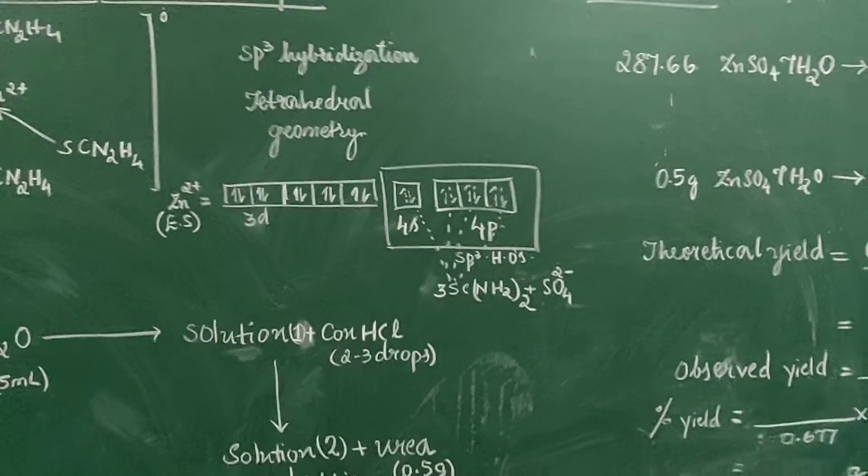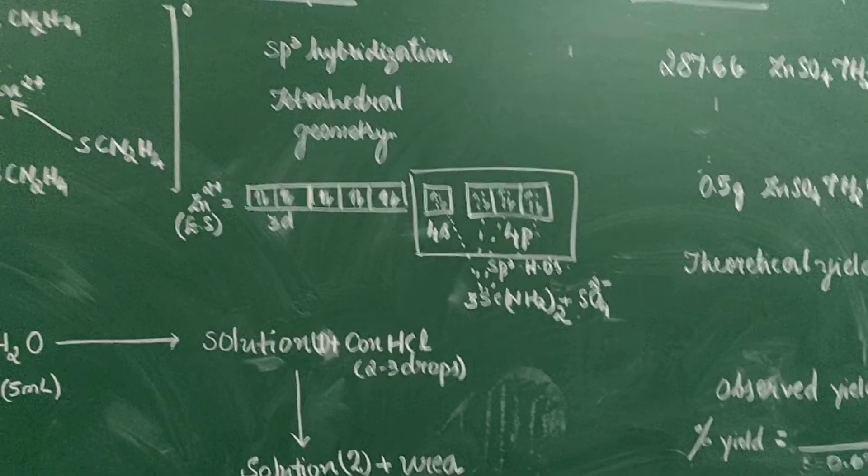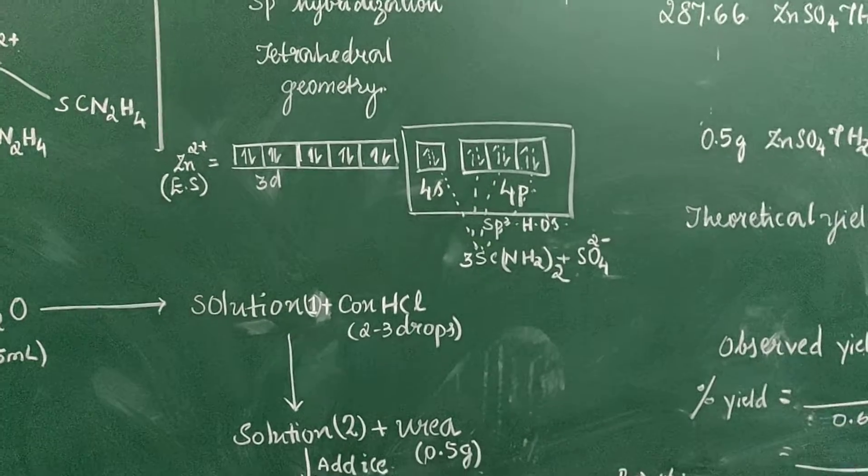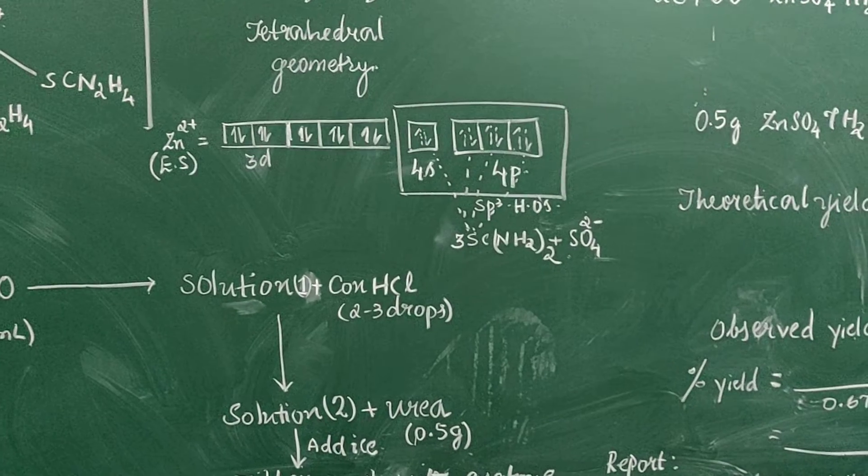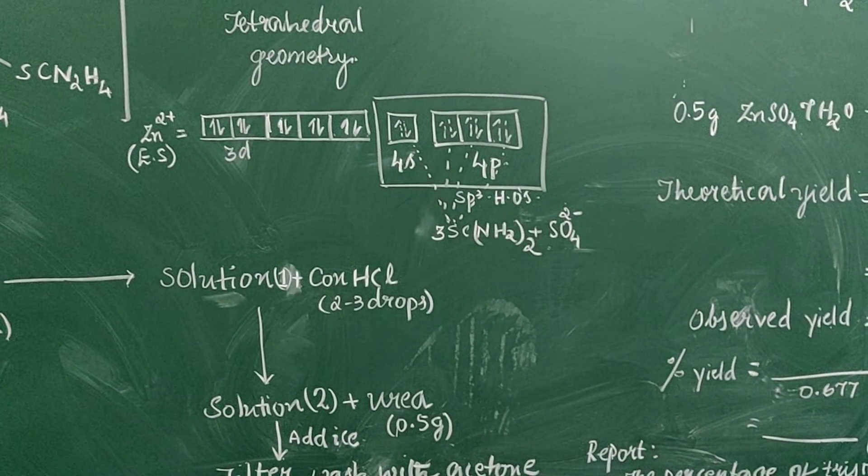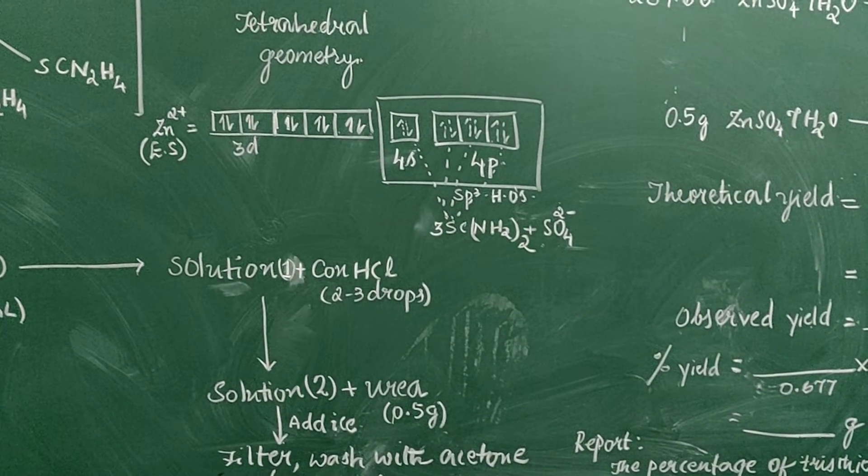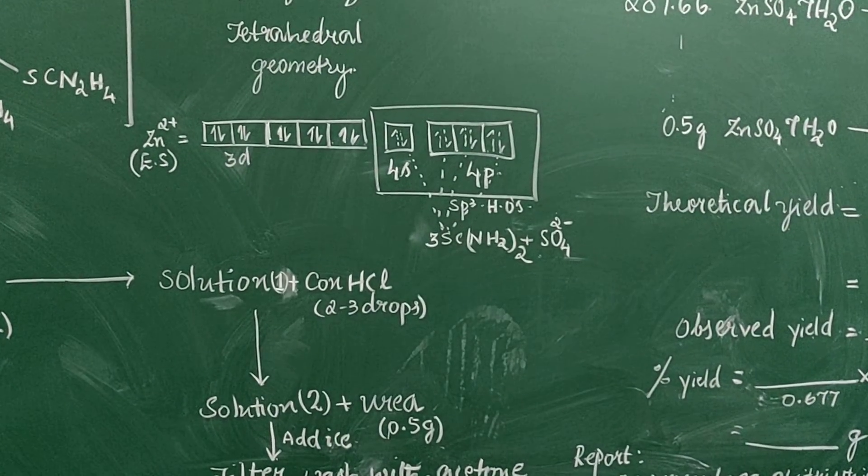So, zinc 2+ ion is a 3d10 system and hence we have vacant 4s and 4p orbitals. They combine to give sp3 hybrid orbitals, that is 4s and 4p combined to give 4 sp3 hybrid orbitals.